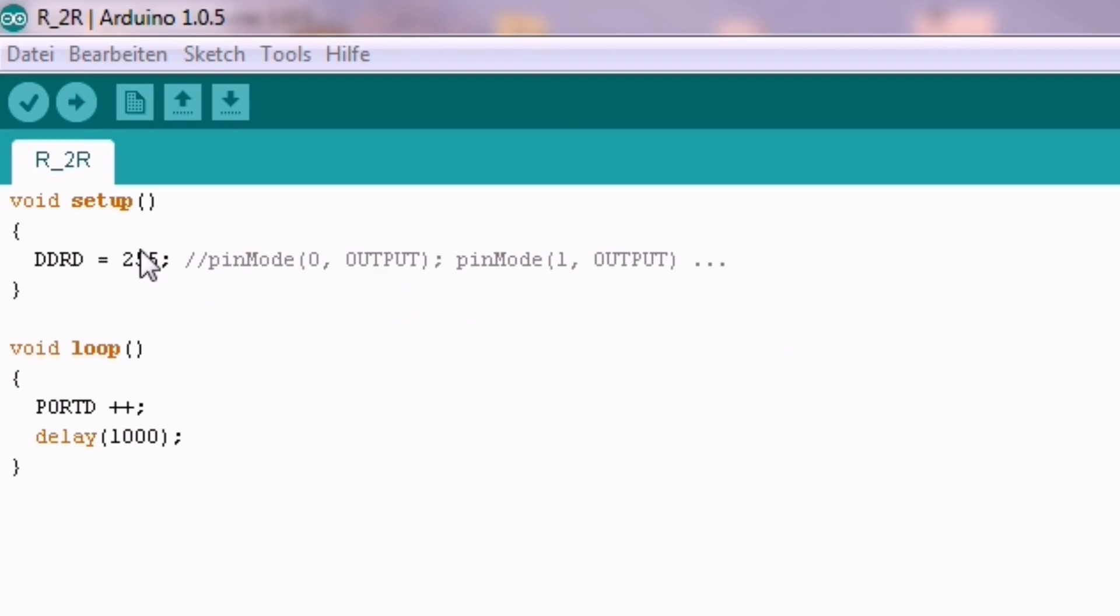In the setup I just set the D port as complete output. We will need all 8 bits later. In the loop we will just increment the D port and wait for a second. Let's check the outcome.